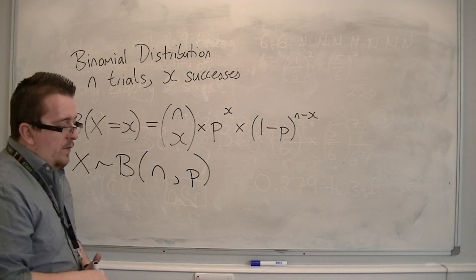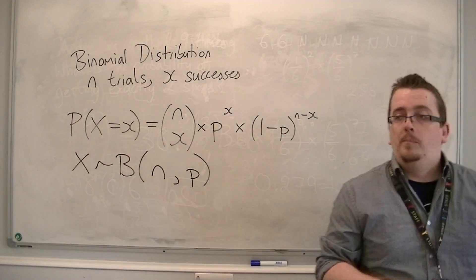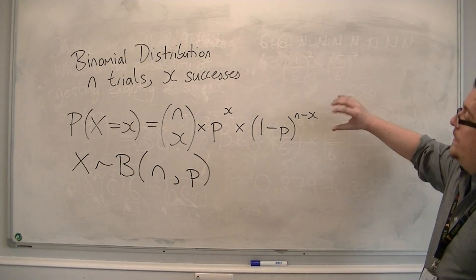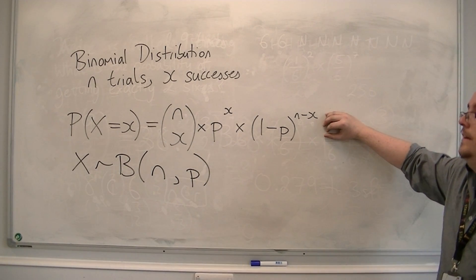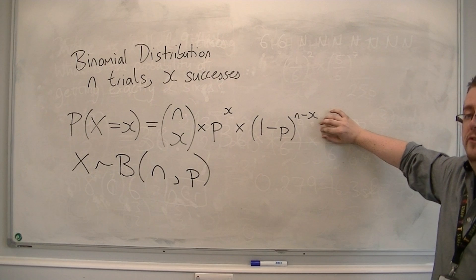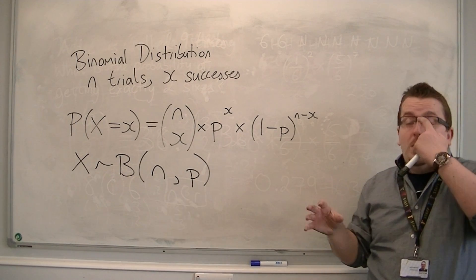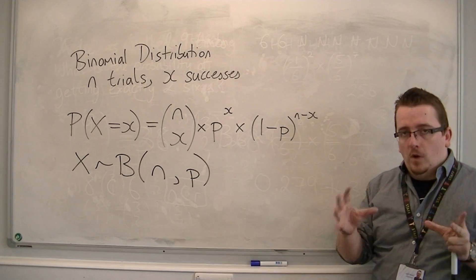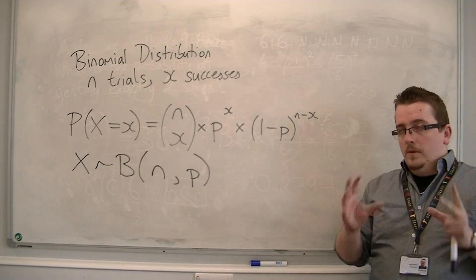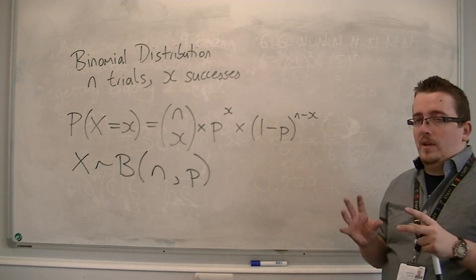So that's how we define a binomial distribution. And this is how we can calculate specific values from it. So in the next video, I'm going to show you how this works. It may look quite complicated at the moment, but it will come clear in the next video.